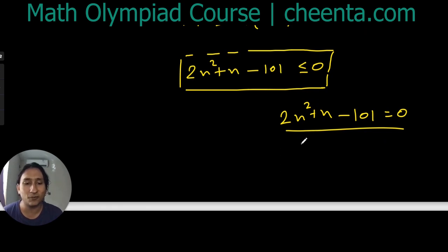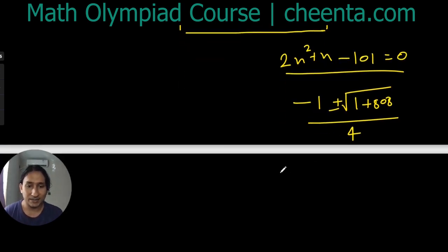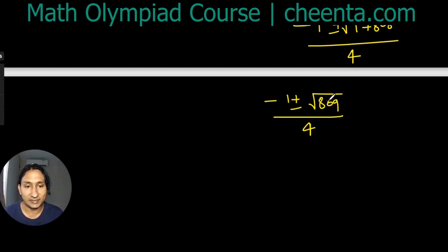So let's use the quadratic formula here. That gives (-1 ± √(1 + 808))/4, that's (-1 ± √809)/4.